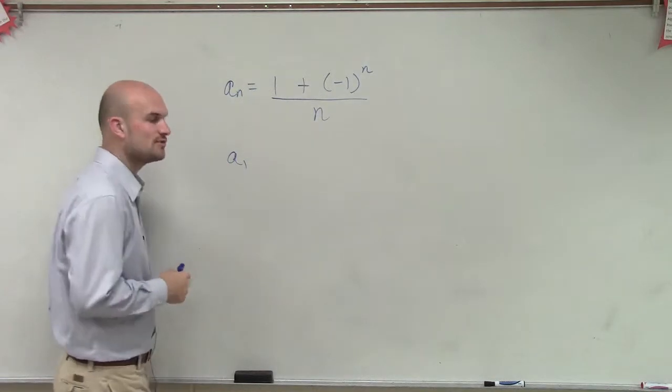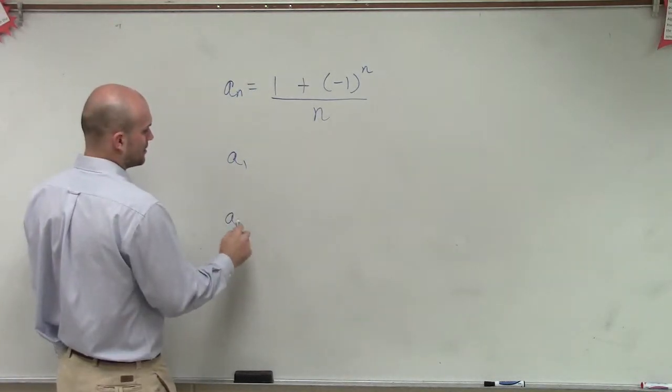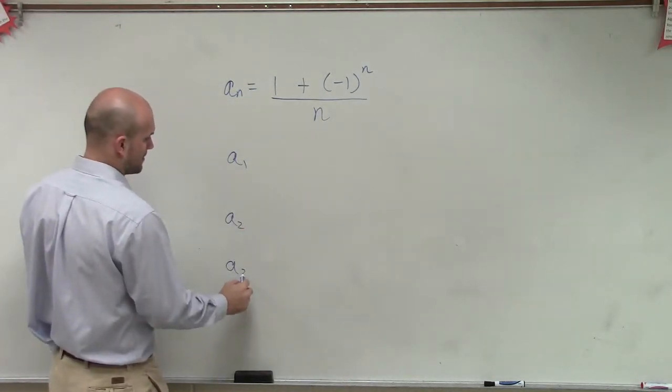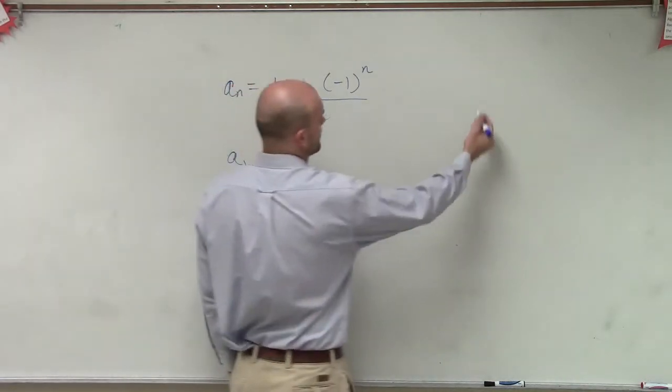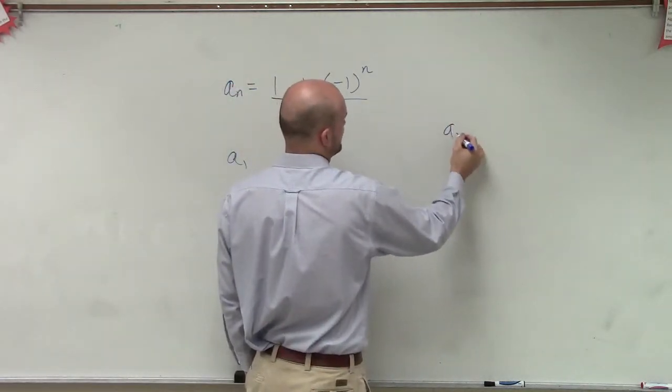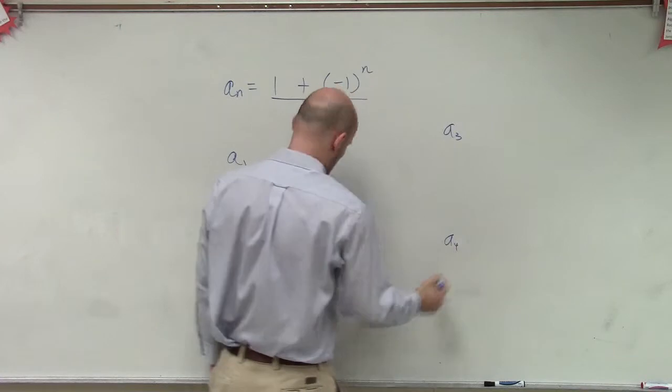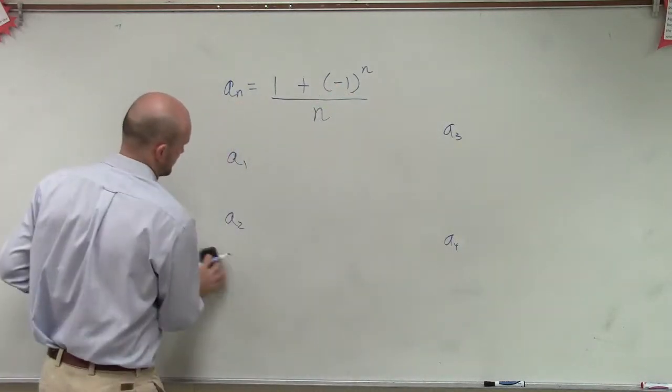So here, we're just going to find our first four values. So I'll have a_1, a_2, a_3, and then maybe we'll do a_3 over here and a_4. Get a little more space. All right.